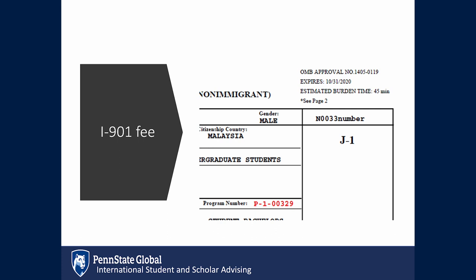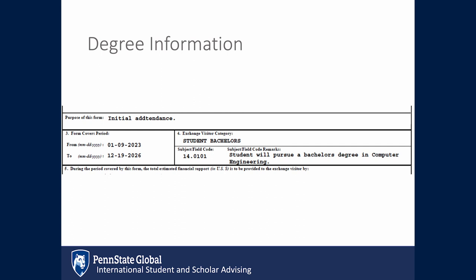The program number listed in red will be necessary for payment of the I-901 fee. The degree information located in the middle of the DS-2019 shows the major to which you have been admitted.